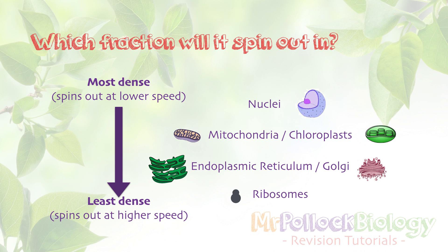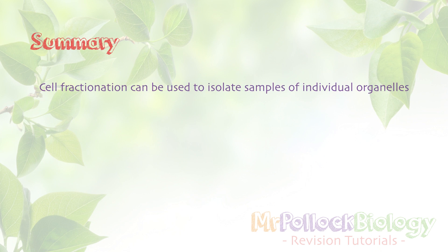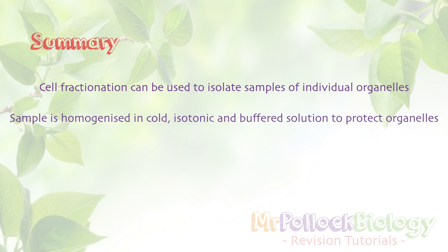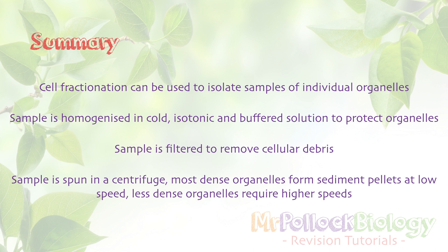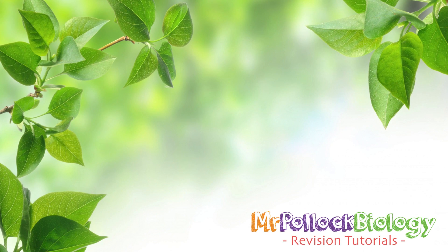To summarise: we can use cell fractionation to isolate samples of individual organelles. The sample, before homogenisation, must be cold, isotonic, and buffered in solution to prevent any damage to organelles. The sample is then filtered to remove cellular debris that may be of equal density to some organelles. Finally, we spin the sample in a centrifuge — the most dense organelles form sediment pellets at low speed, and less dense organelles require spinning again at faster speeds. I hope that's been really useful, guys. It's a nice little topic and I'm pretty sure it's going to be on this year's exam. Good luck, and please like, comment, and subscribe. Thank you very much — goodbye.